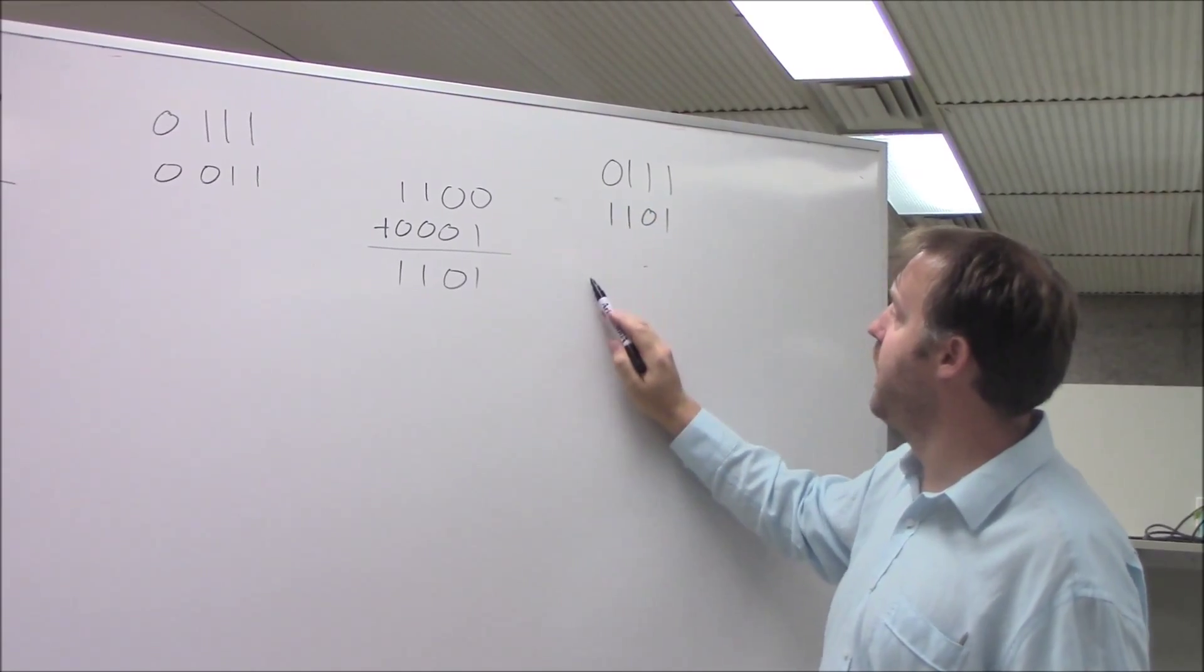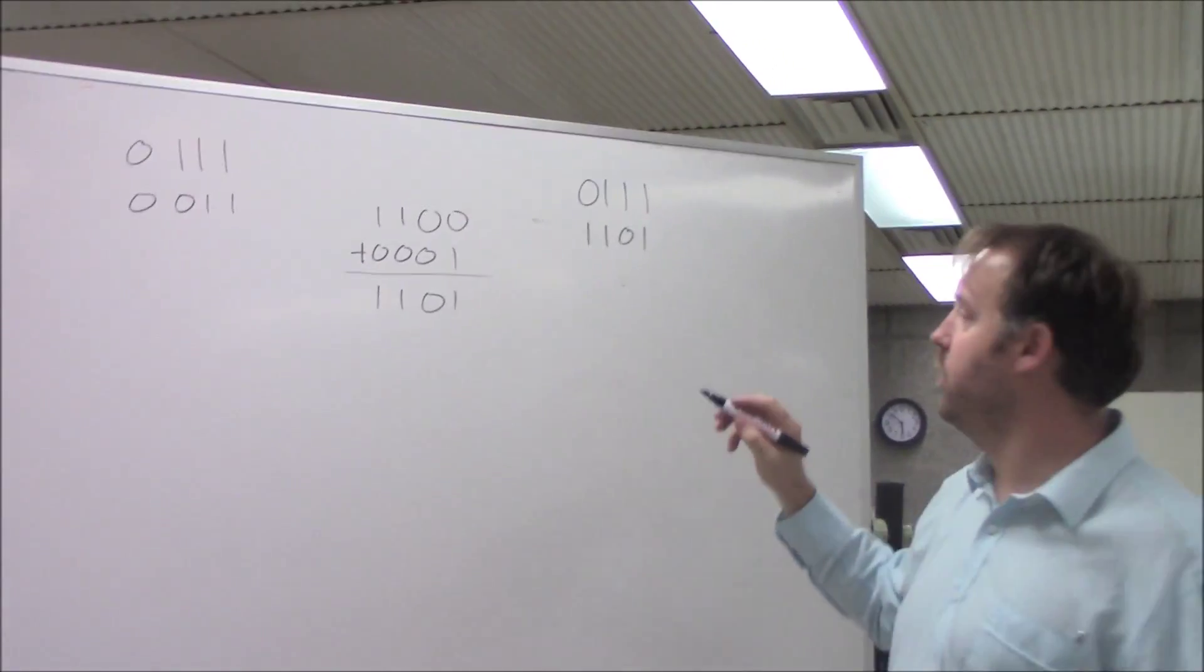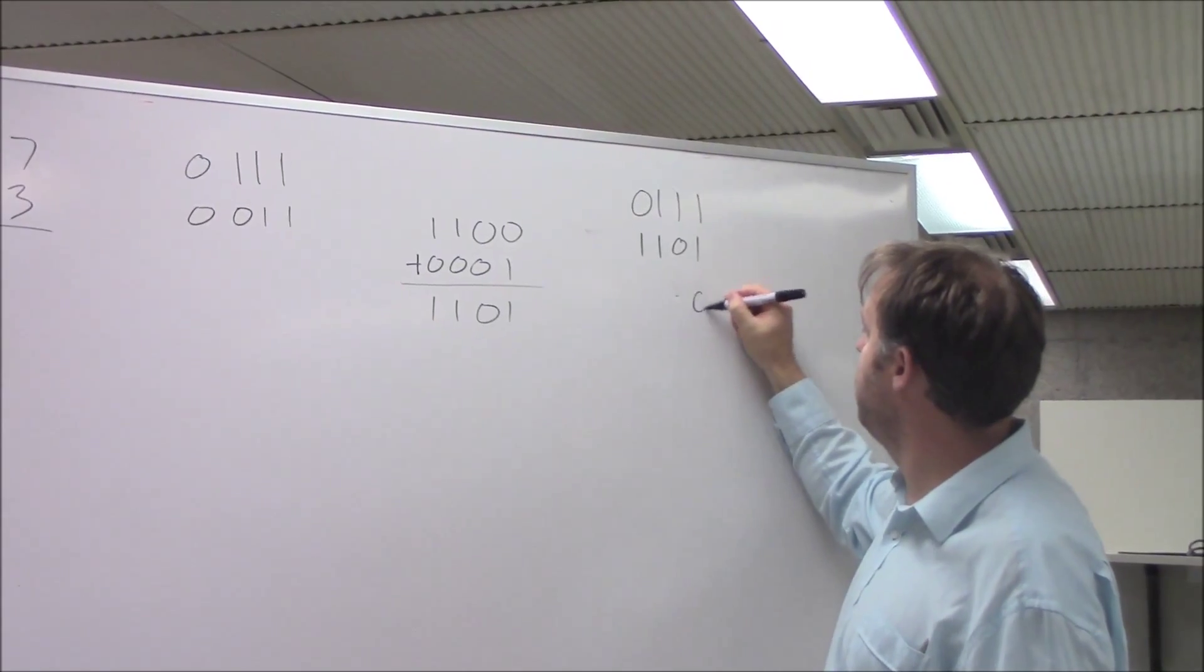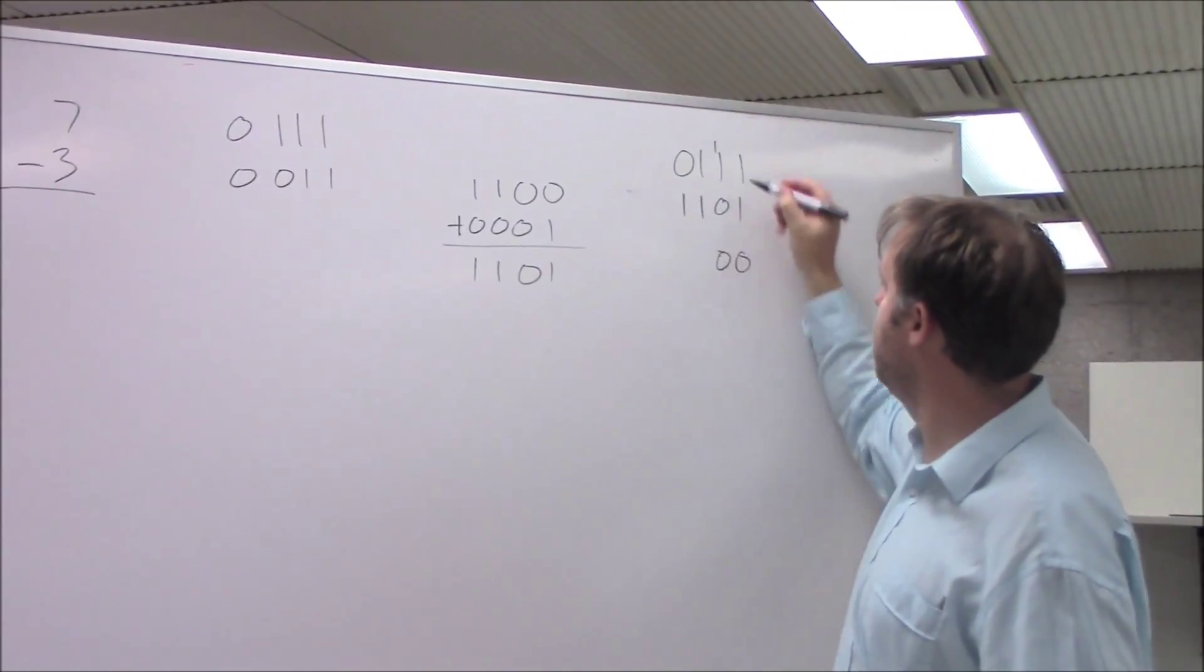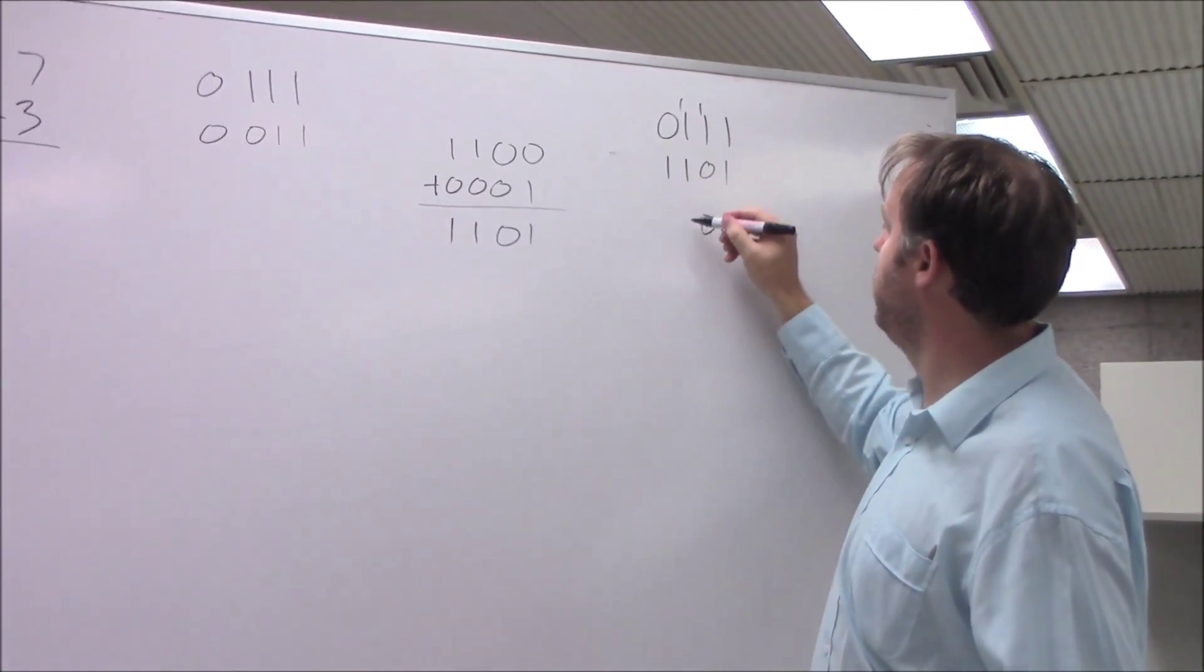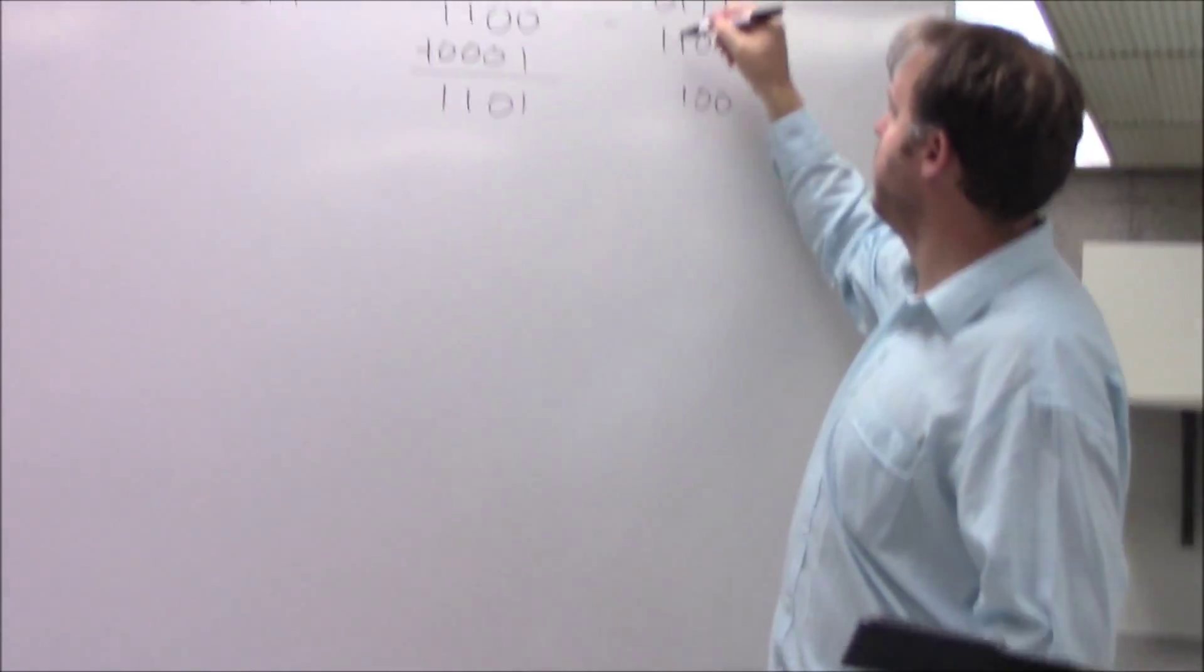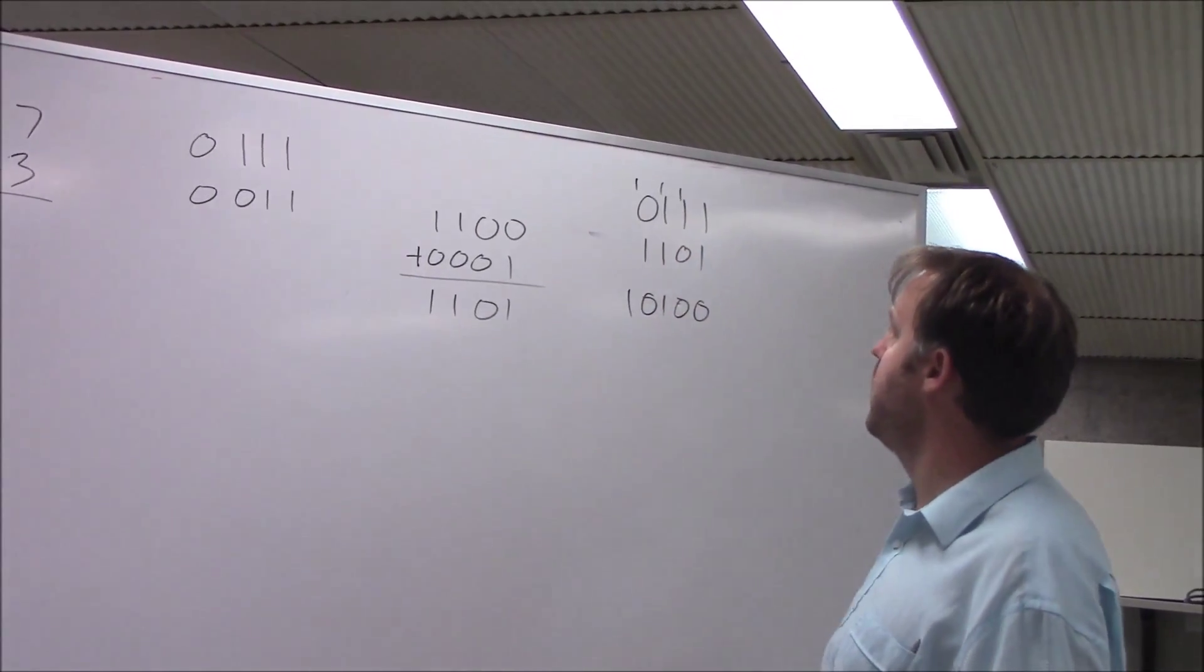So I'm going to get a number, a 1 out here in front, and that's what I ignore. So 1 plus 1 is 10, 1 plus 1 plus 0 is 10, 1 plus 1 plus 1 is 11, 1 plus 0 is 10.